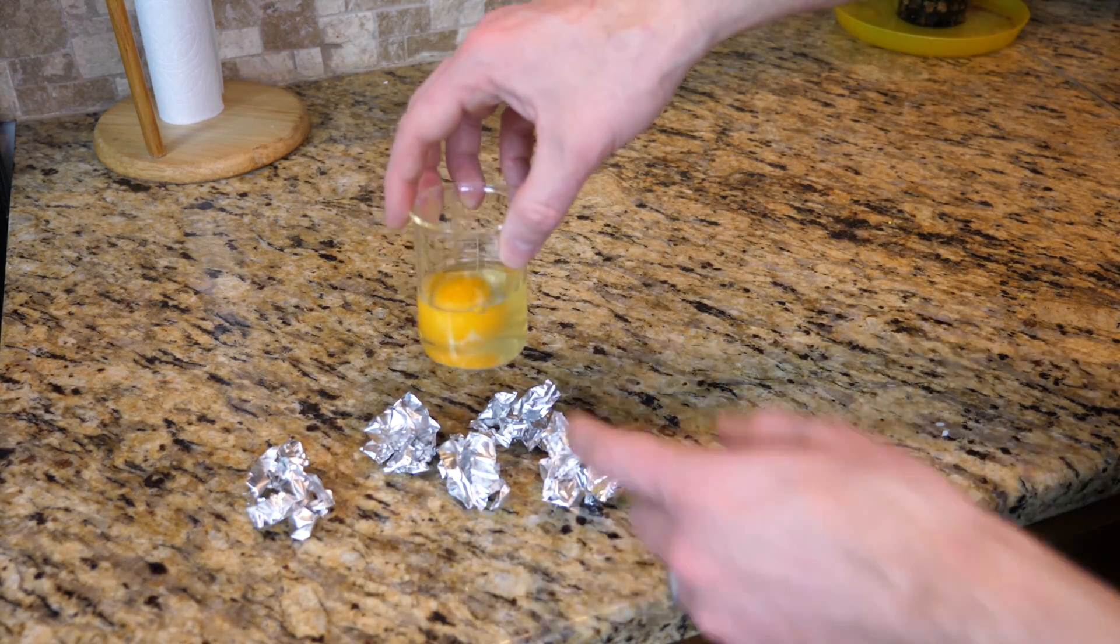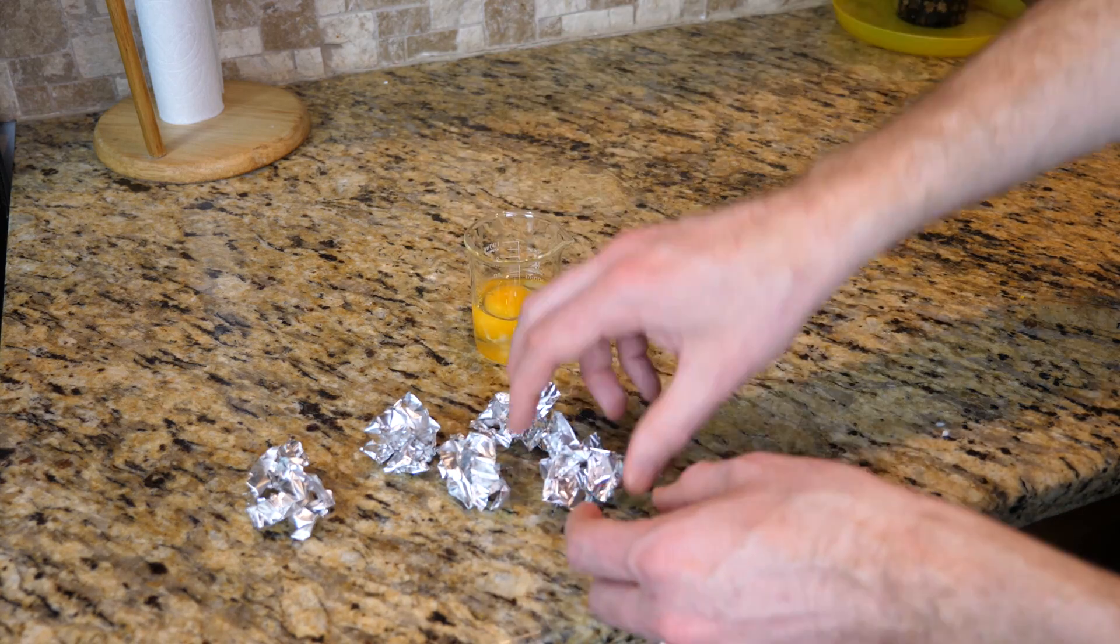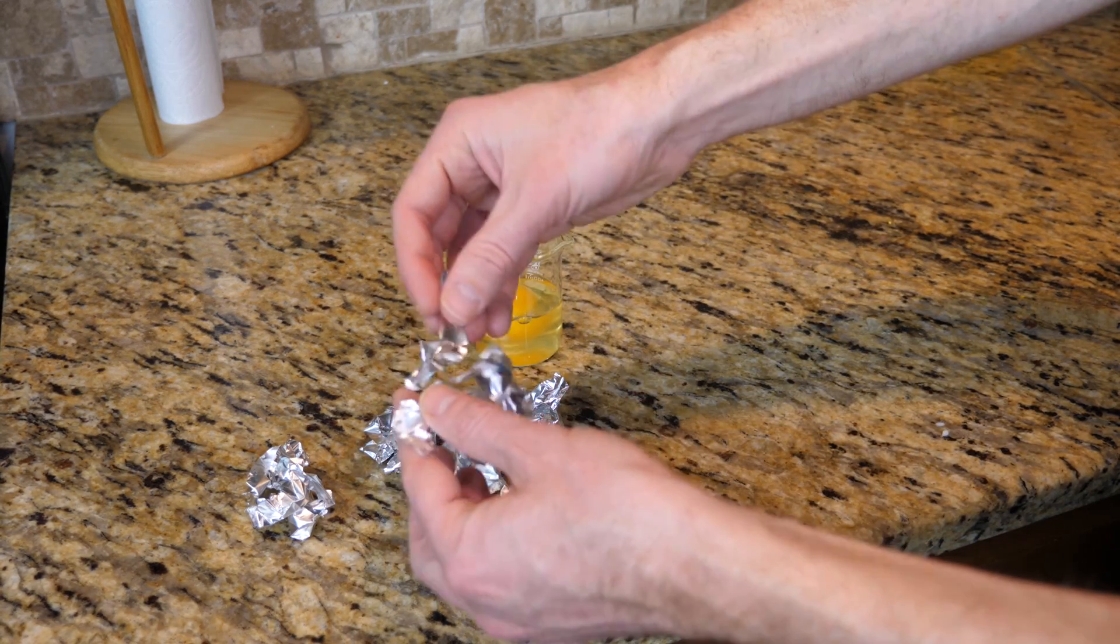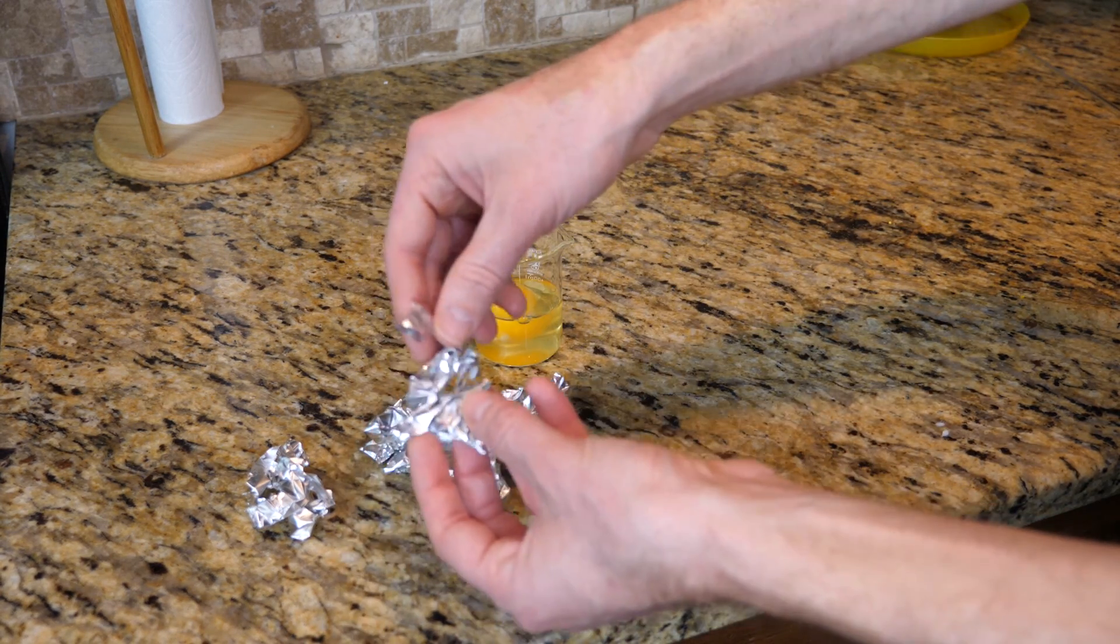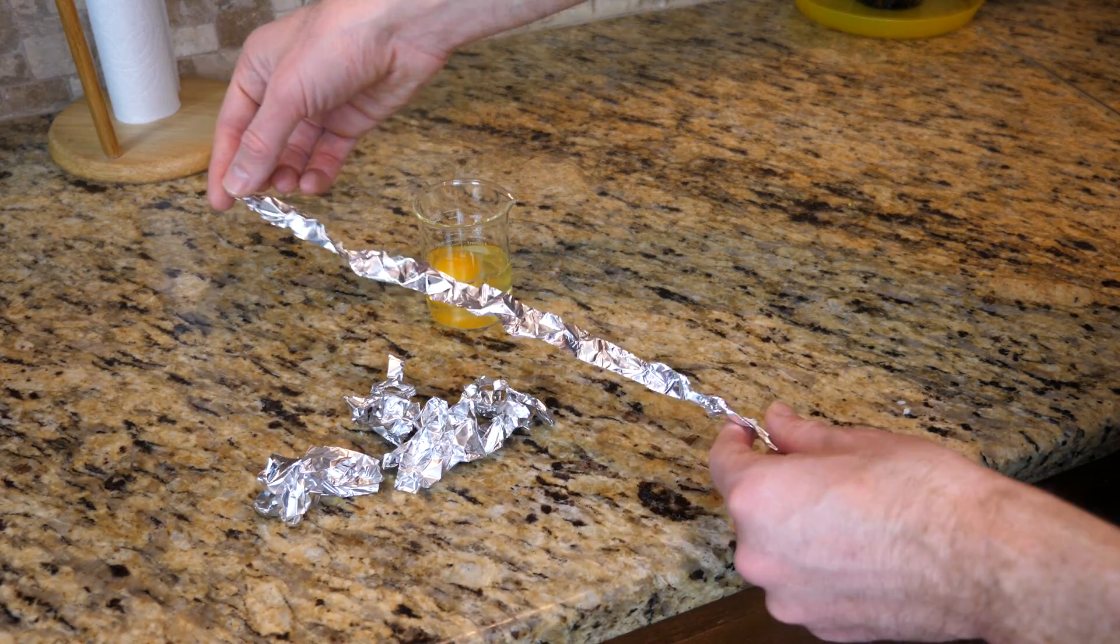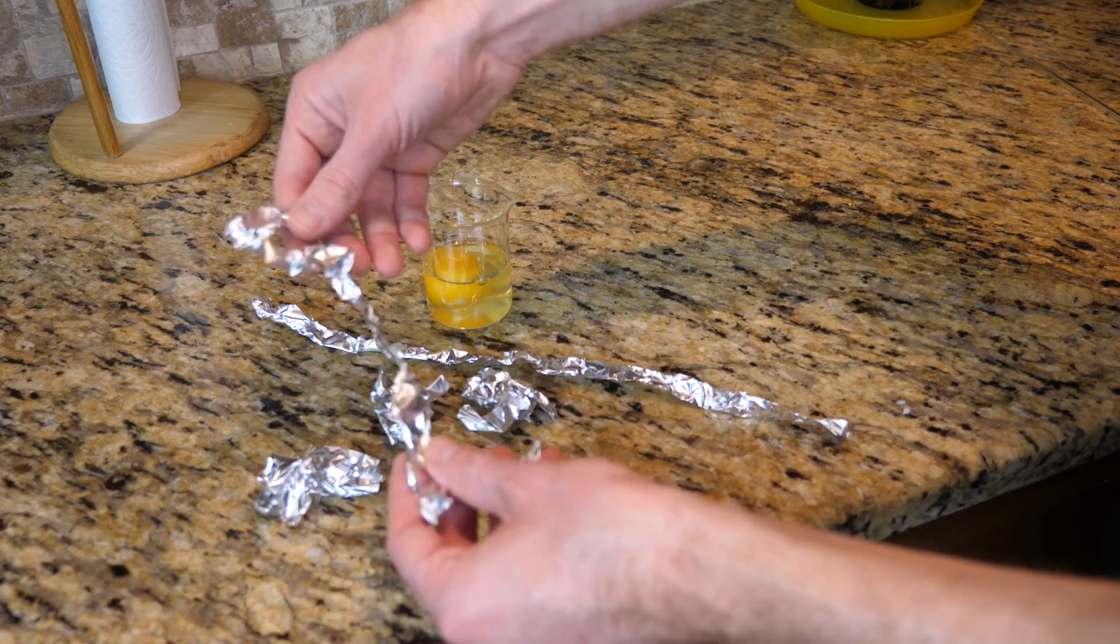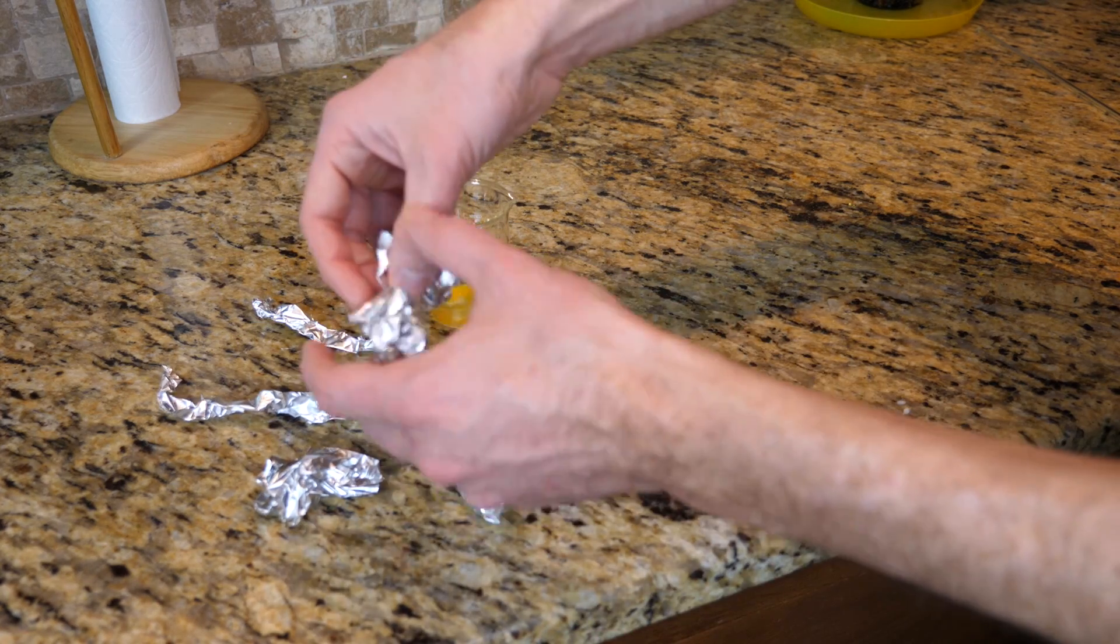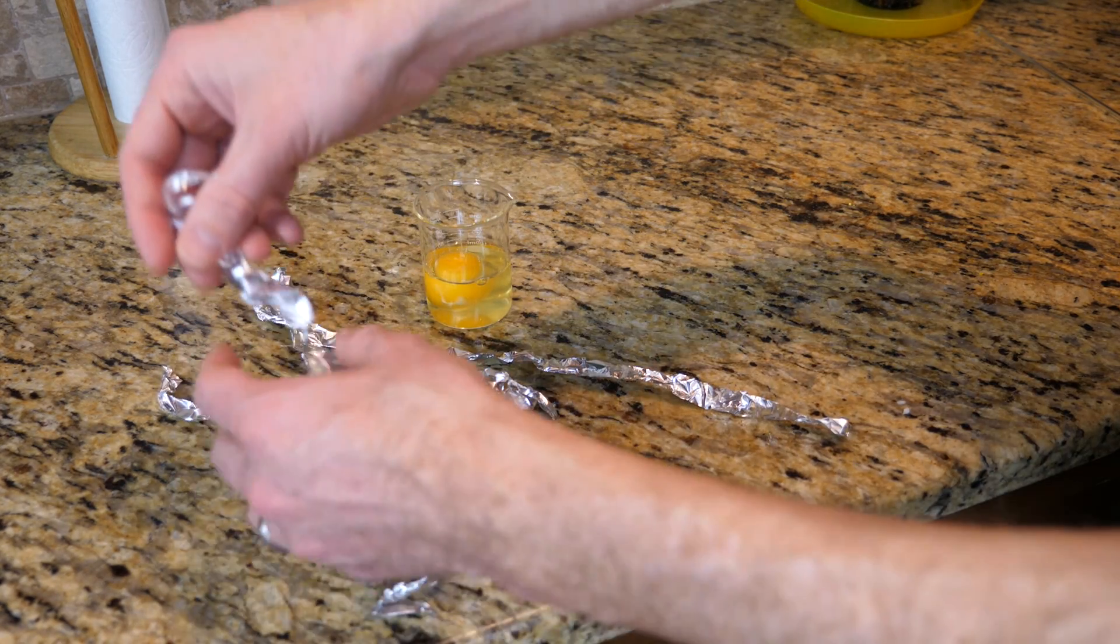But when you start to heat up the egg, the proteins start to vibrate a little bit more. And they vibrate so much that they can't stay hooked together in their clumps. So when the egg white heats up, these long molecules start to spread out again. And they kind of unravel. And this is called denaturing.